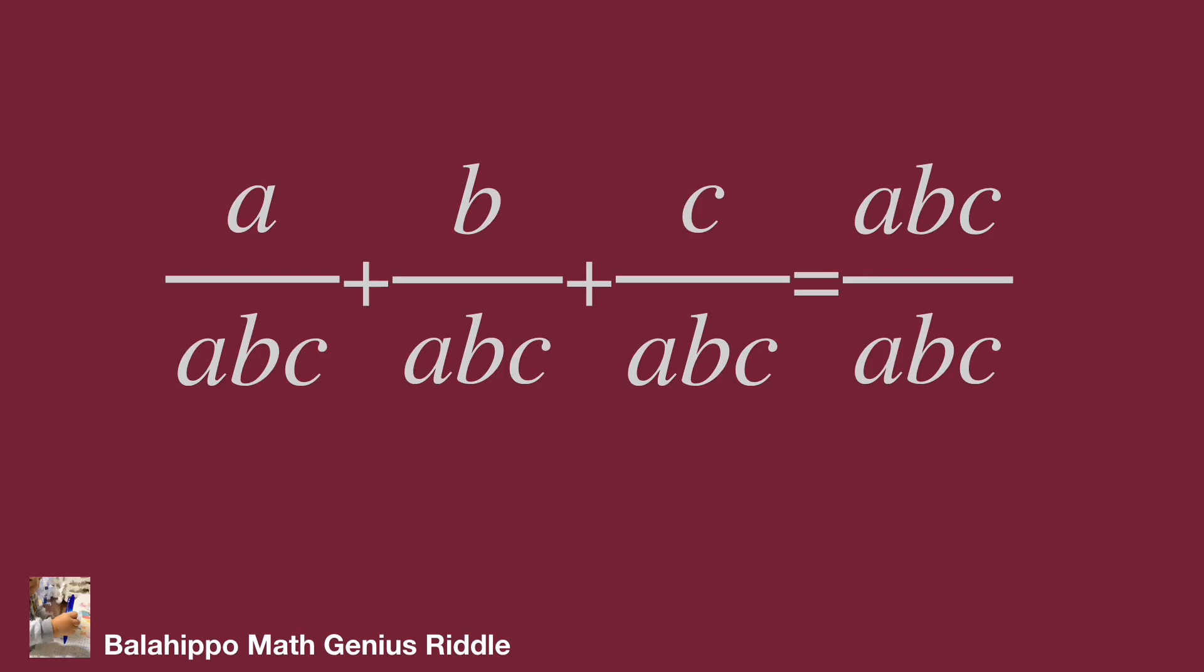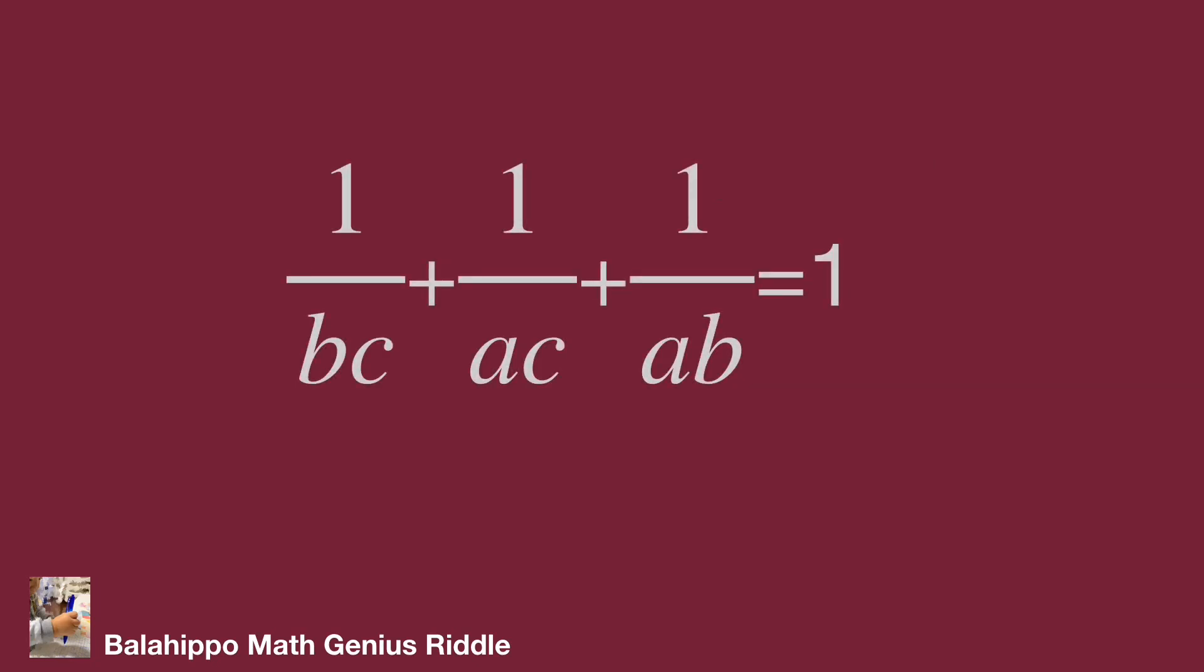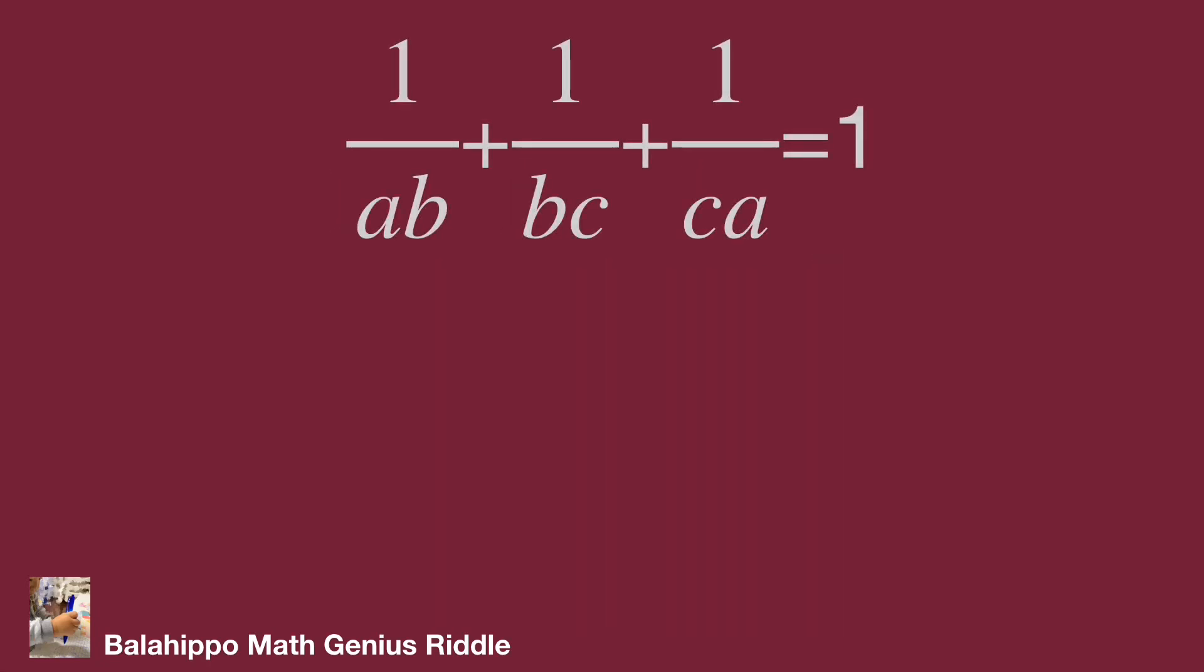Then simplify this equation as 1 over BC plus 1 over CA plus 1 over AB equal to one. Adjust the A, B, C sequence as we are familiar: 1 over AB plus 1 over BC plus 1 over CA equal to one.